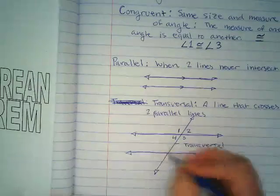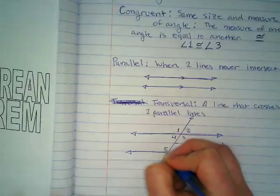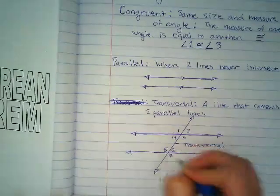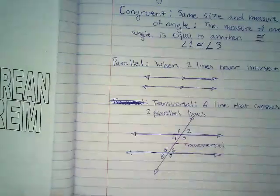And I have this show up again down here, so I'm going to label these angles 5, 6, 7, and 8.